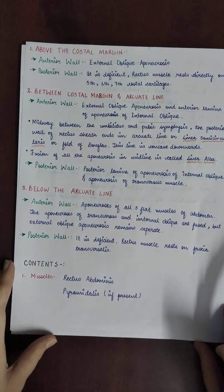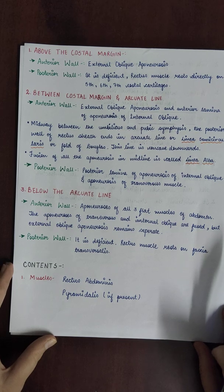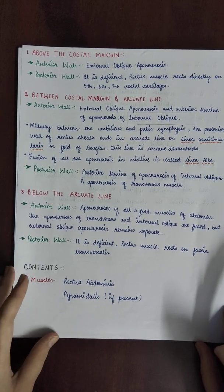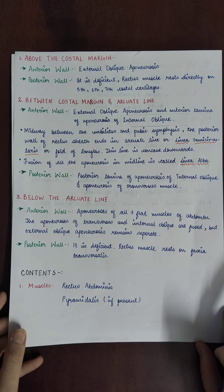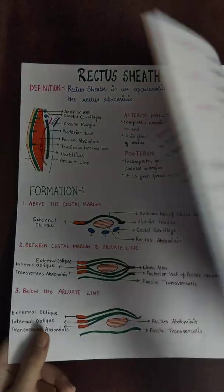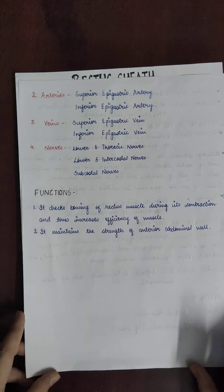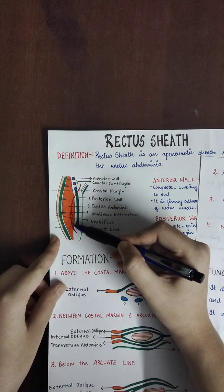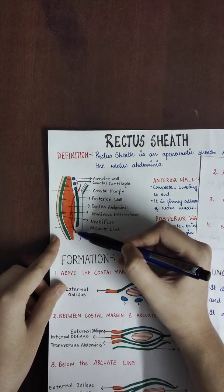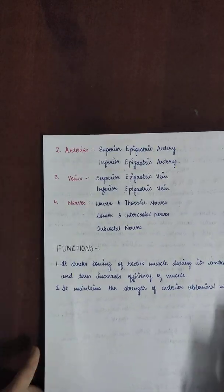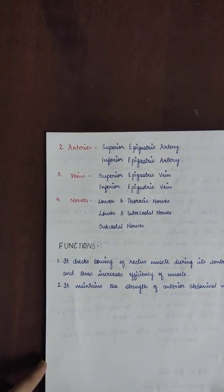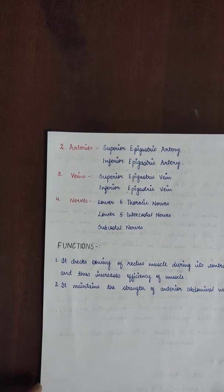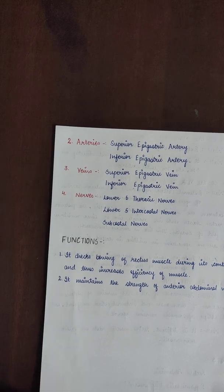Now let us see what is present in the rectus sheath — the contents of the rectus sheath. The muscles present are the rectus abdominis muscle and the pyramidalis muscle, which may be present. The arteries are the superior and inferior epigastric arteries. The veins present are the superior and inferior epigastric veins. The nerves present are the lower six thoracic nerves, lower five intercostal nerves, and the subcostal nerves.